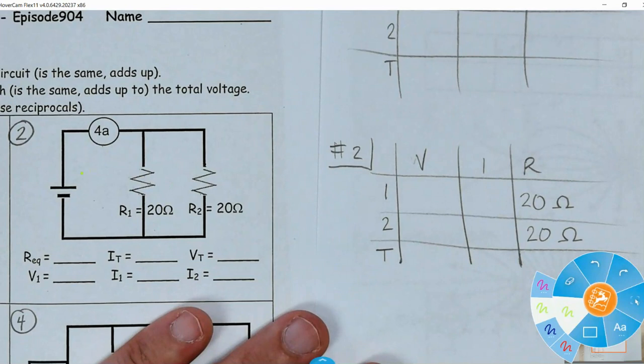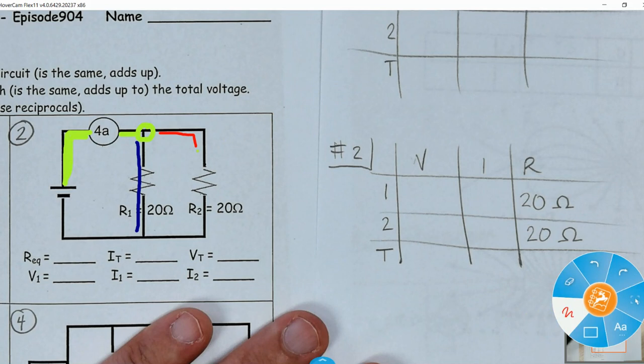So again, before the current gets to this circle, you have full amounts of current. You have the full amount of current here. But once it gets to that circle, it can take two different paths. It can take the first path through resistor one, or it can take the second path through resistor two. And both those currents could be the same, they could be different. We don't know yet.